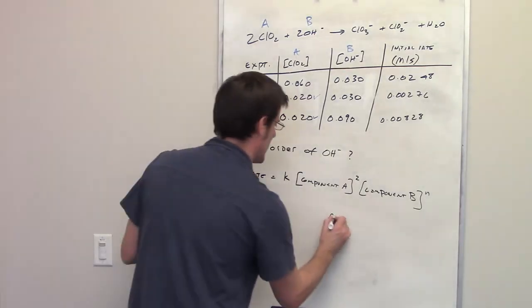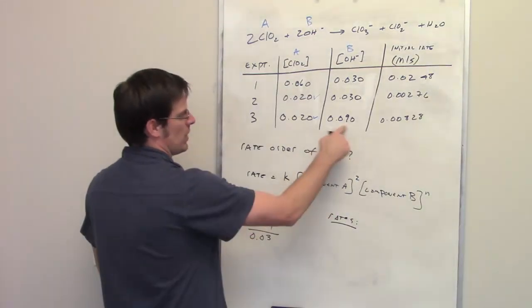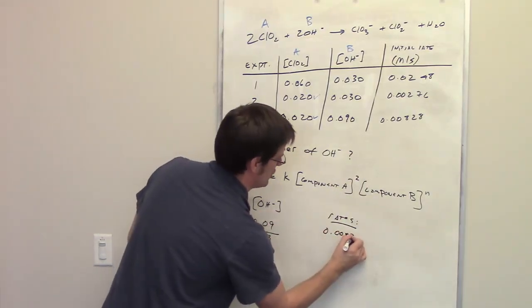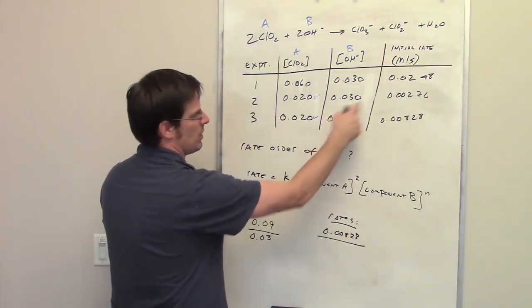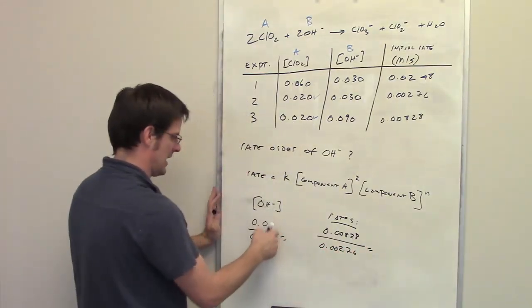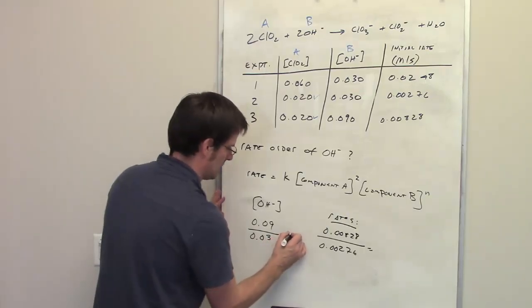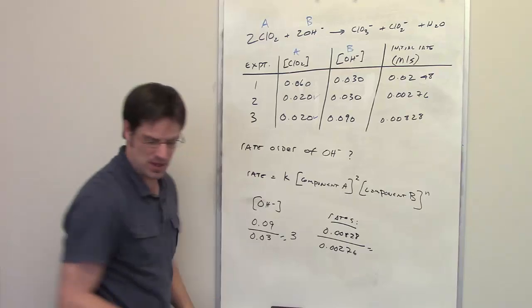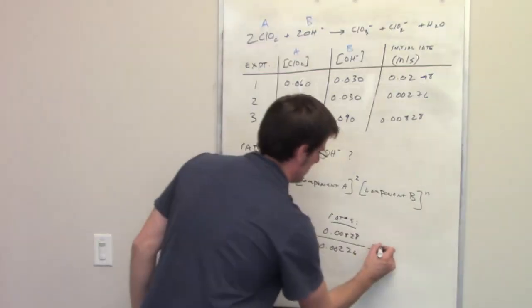How did that affect the rates? Well, the rate, when I set the concentration to 0.09 was 0.00828. When I set it to 0.03, the rate changed to 0.00276. Now I just do the division. 9 divided by 3 is equal to 3. And this divided by that is also equal to 3.